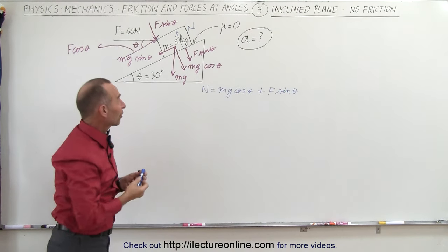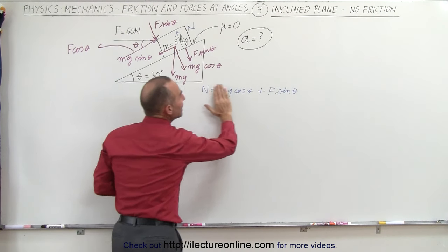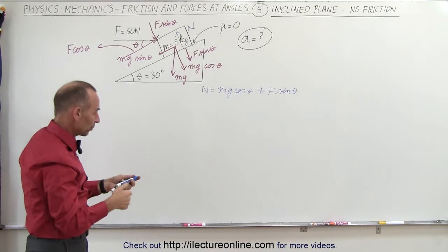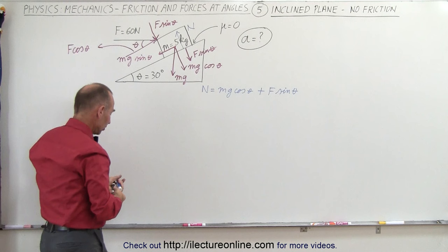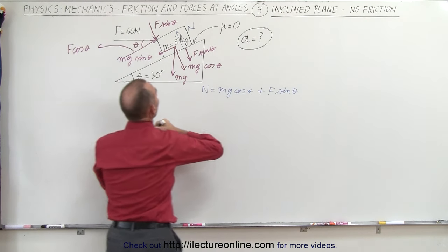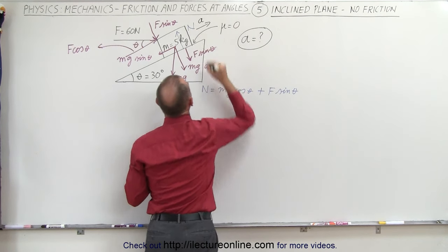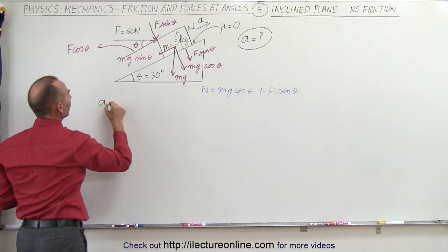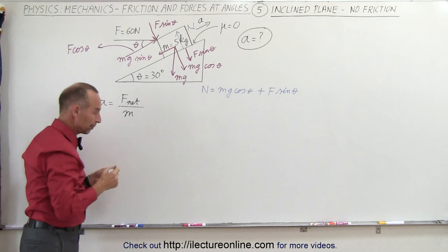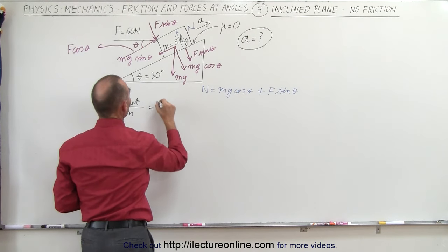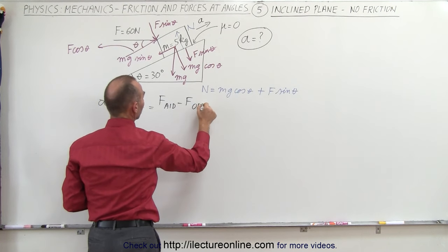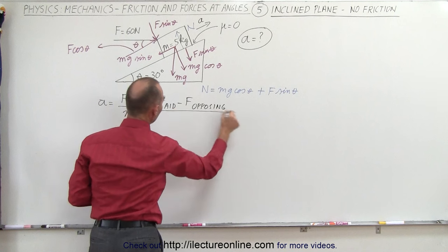Now since there's no coefficient of friction between the block and the surface we don't really need the normal force, but I just wanted to calculate it so you can see how that's done, because later on we're going to need it. Assuming there's enough force to cause the block to accelerate upward, we assume the acceleration is in that direction, and we can say the acceleration equals the net force acting on the block divided by the mass.